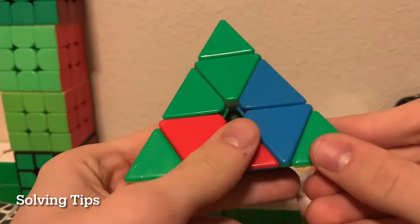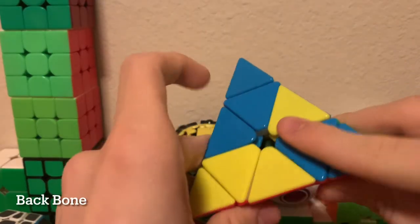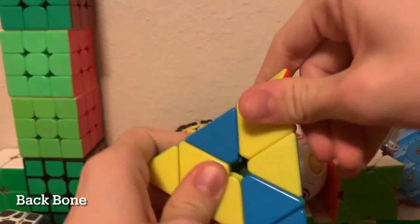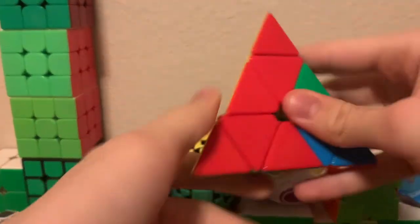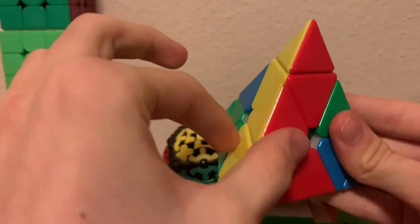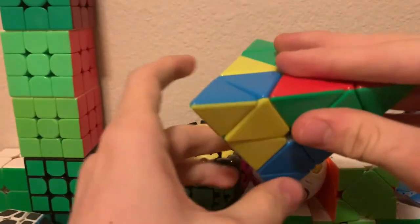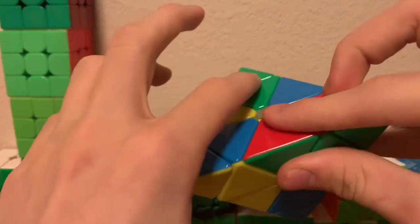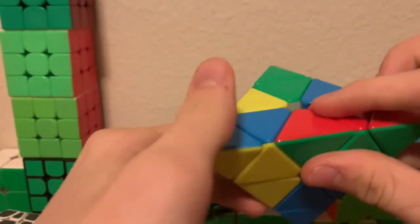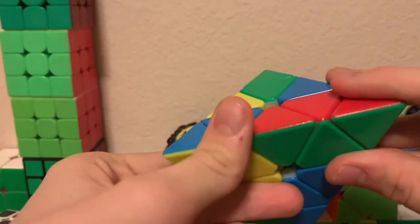The first step is solving tips. Next you make a bar. For this tutorial I'm going to have a red and yellow bar and we're going to place this in the back with blue on the bottom and green on the top, but in the actual method you want to be color neutral.